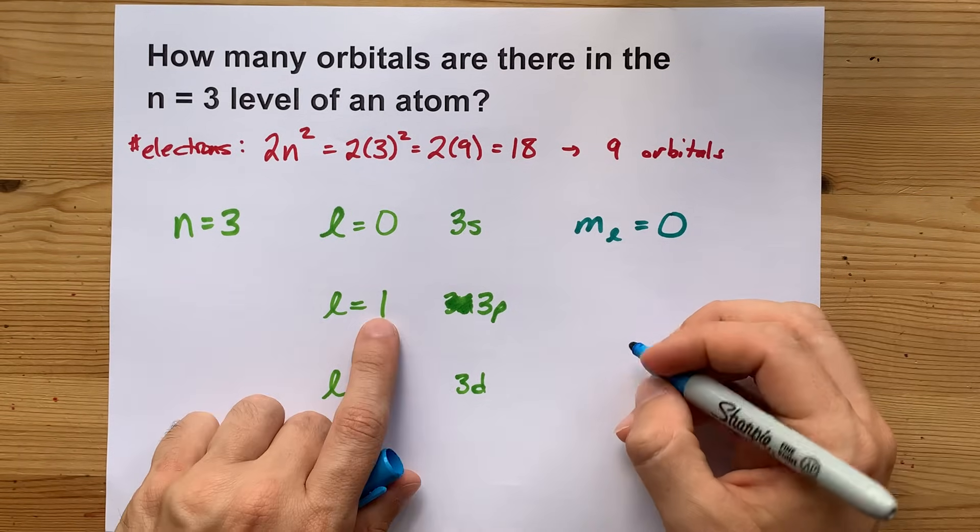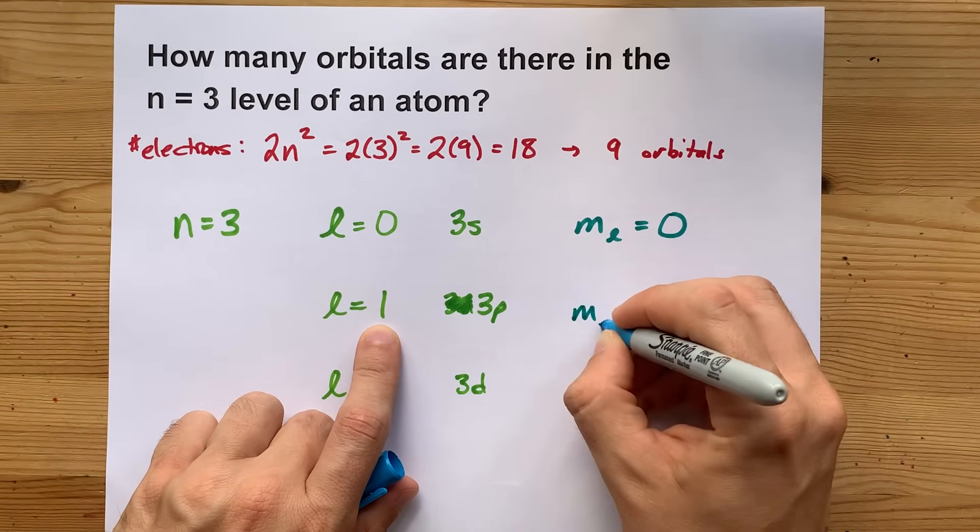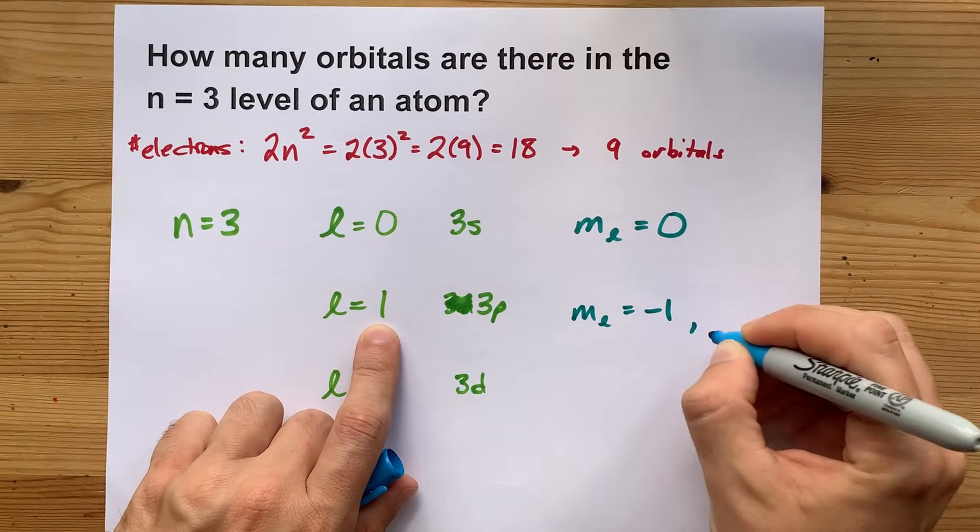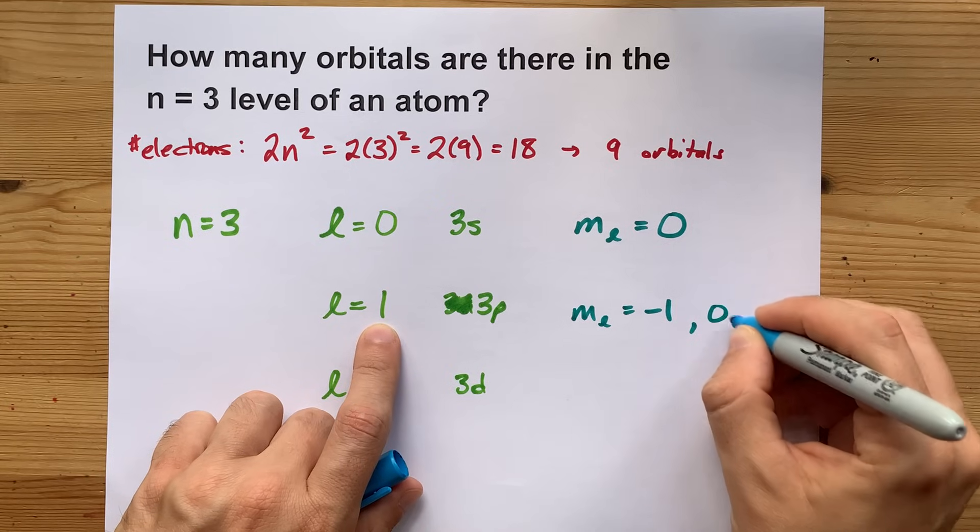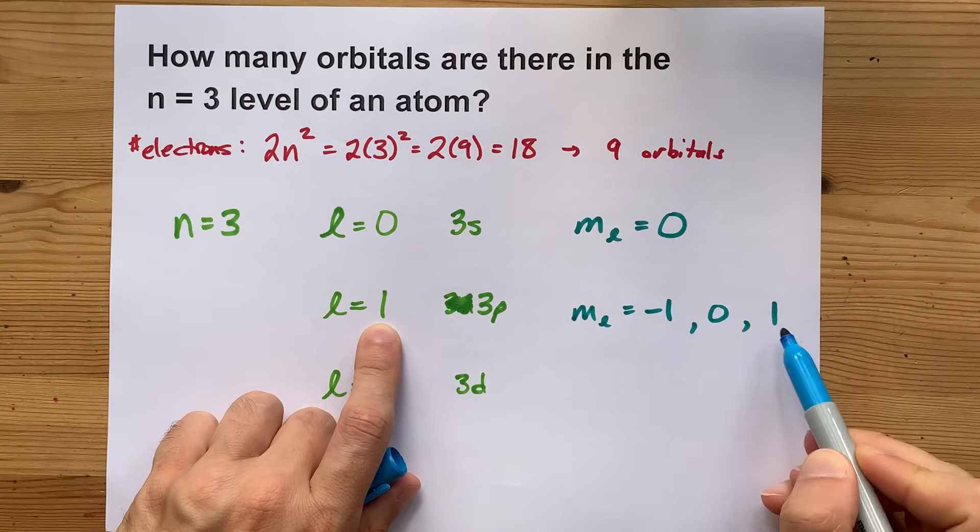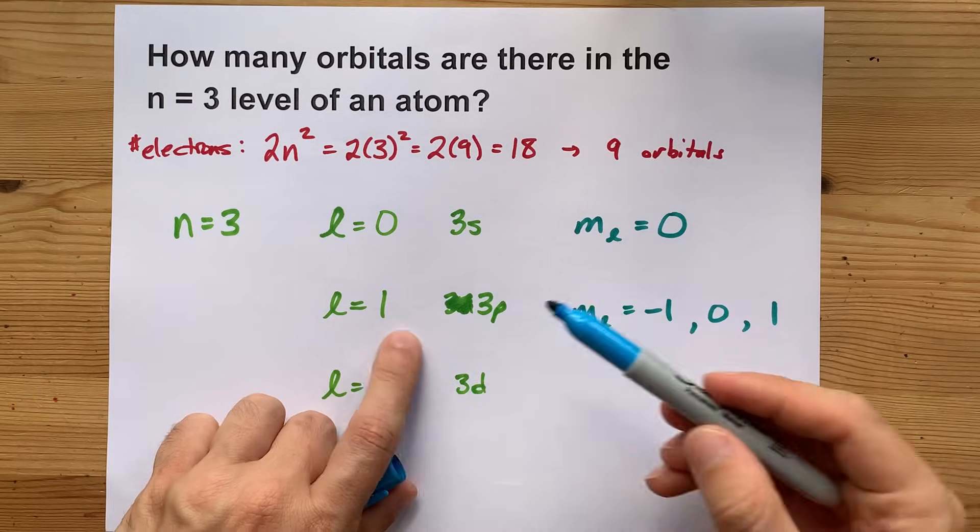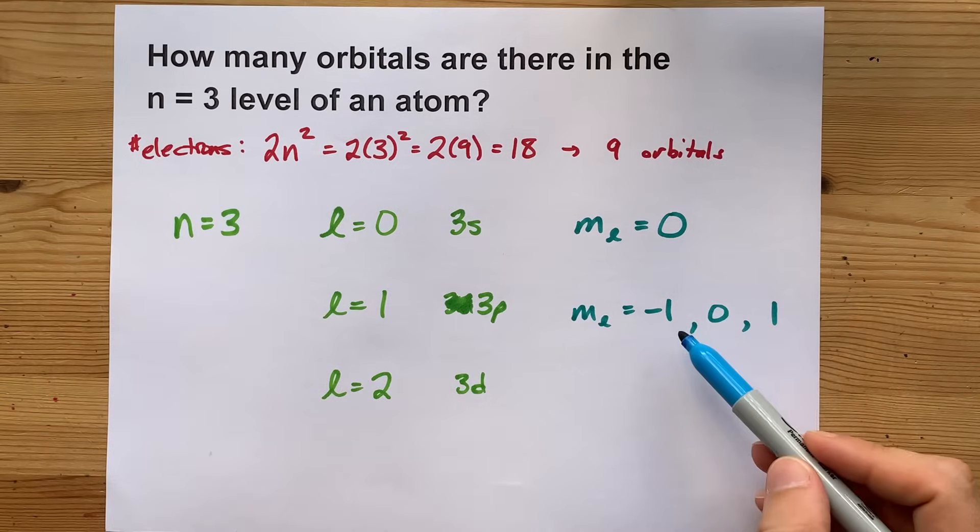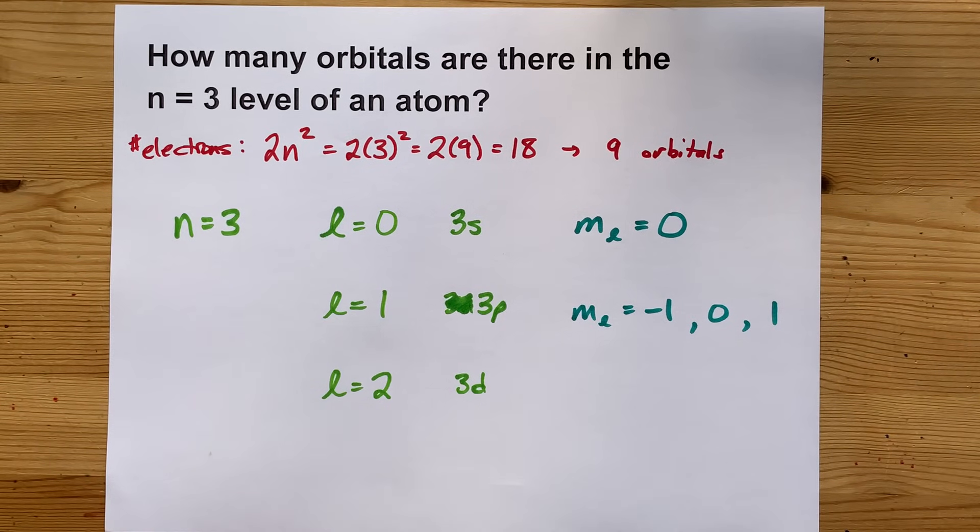So here though, your ML can be negative 1, and then you count all the way up to positive 1. So there's three possible MLs for that L. What that means is that the 3p subshell has three orbitals inside of it.